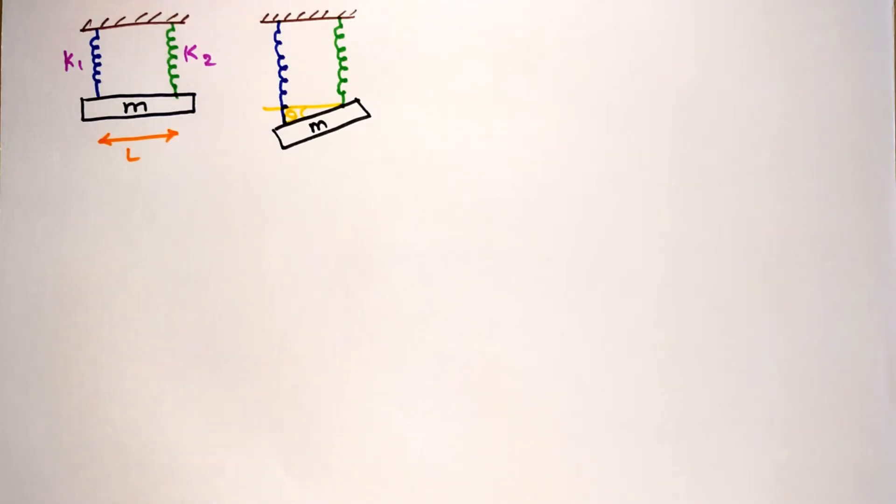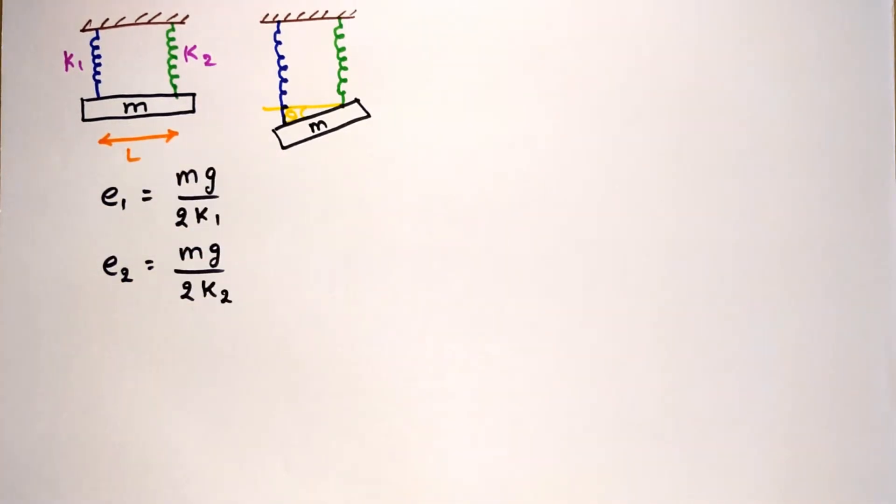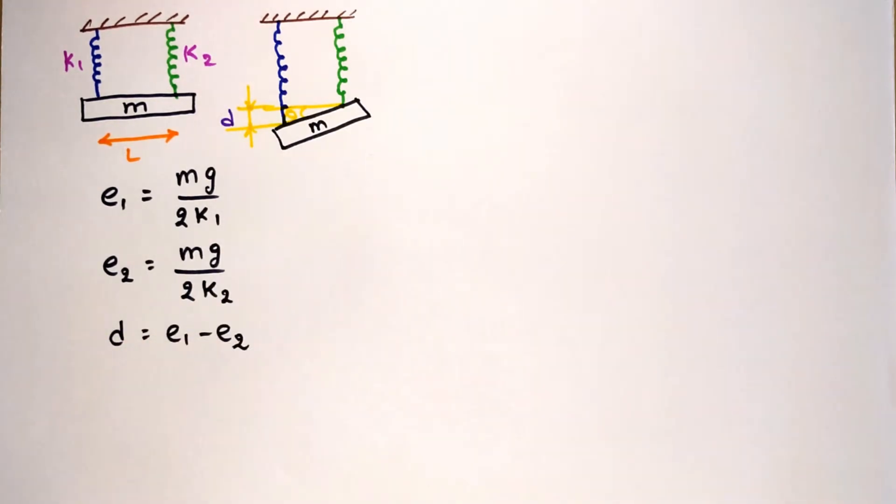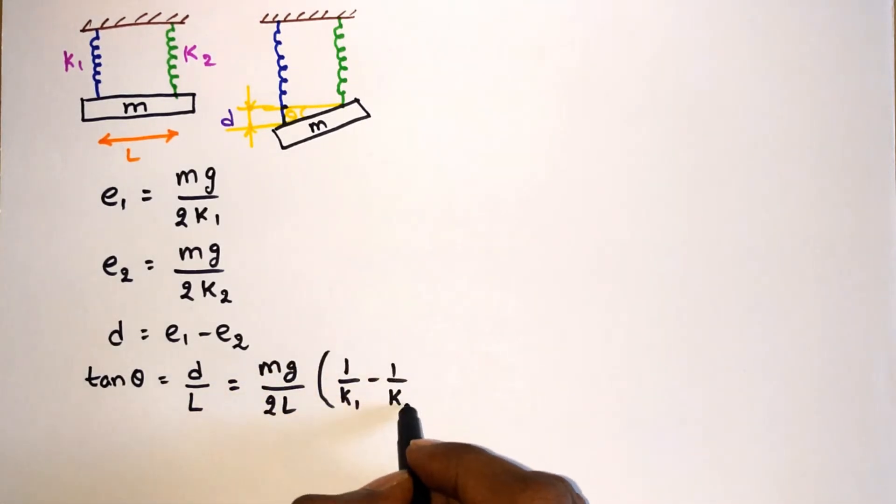But since the springs are placed symmetrically on the mass, tension in both springs will be equal, that is T equals Mg by 2. Let the difference in elongations be D. Then the inclination of mass M can be found using tan theta equals D by L, where L is the distance between two springs. And the elongation of each spring can be found using Hooke's law. We can substitute D and rewrite the equation as follows.